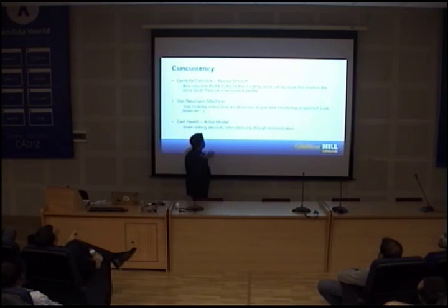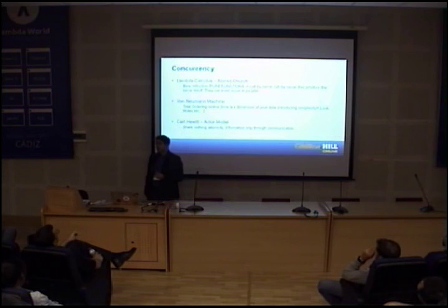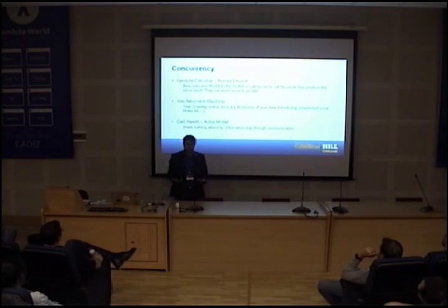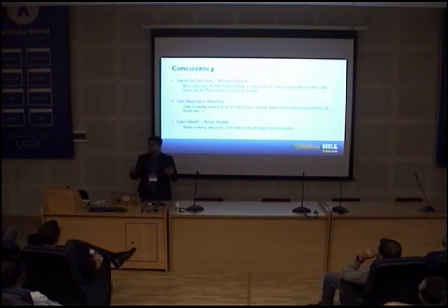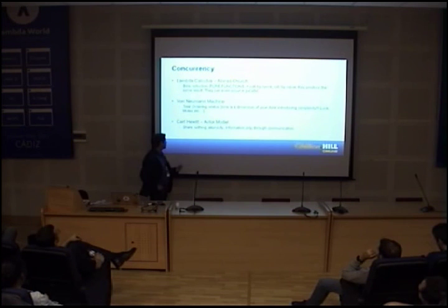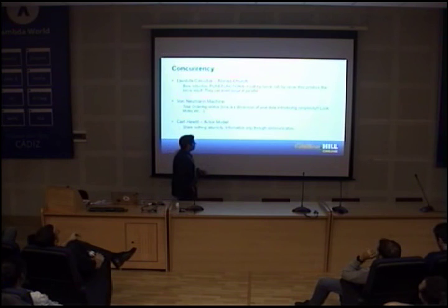Approximately 30 years after the von Neumann machine came another model — the actor model — which is quite interesting because it came from a totally different field. The initial idea was not to create a computational model; it came from the field of artificial intelligence and independent agents. The old idea behind actors comes from AI and independent agents. Properties of this model are: share nothing, atomicity, and communication — sharing information through exchange of messages.